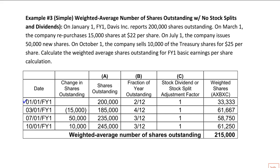We're going to start on January 1st — sometimes it says 12/31, that's the same. This table really helps in organizing all the information. I like to start with the dates: March 1, July 1, October 1. We start with 200,000 shares. On March 1 we repurchase 15,000, so that's 185,000. On July 1 we issue 50,000, so that's 235,000, and they sell 10,000 out of treasury which increases outstanding by 10,000.